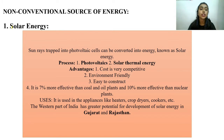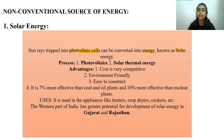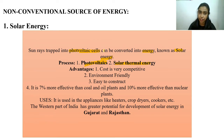First, let's talk about solar energy. Solar energy works by trapping sun rays using photovoltaic cells, which are then converted into energy — that is known as solar energy. Solar energy is made through two processes: the first is photovoltaic and the second is solar thermal energy.